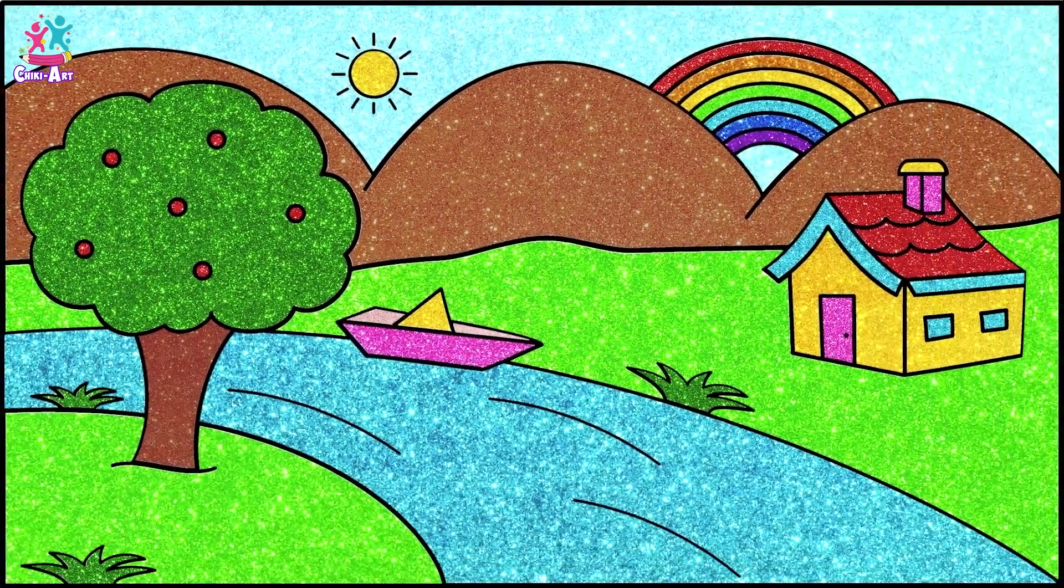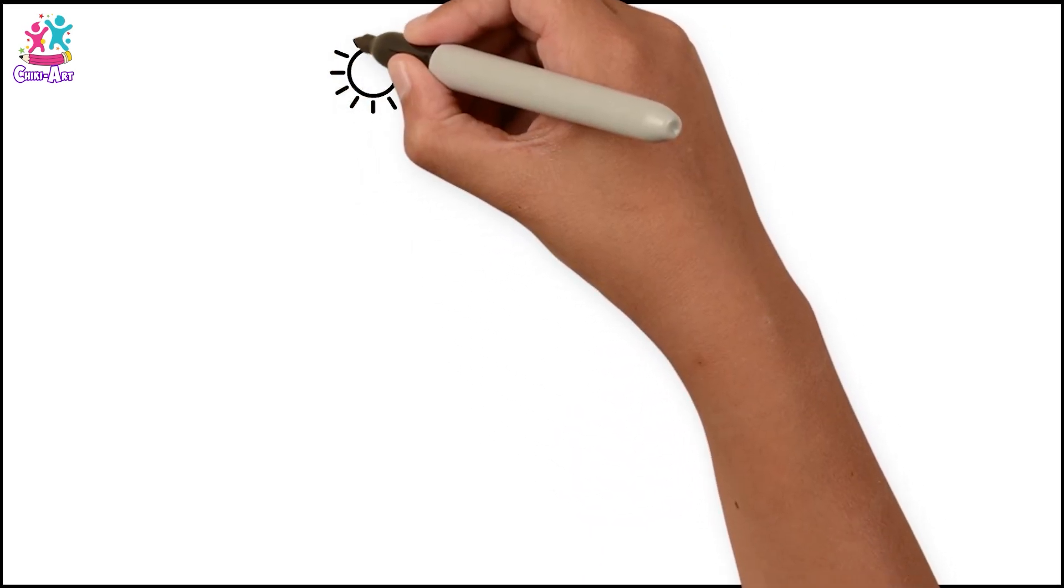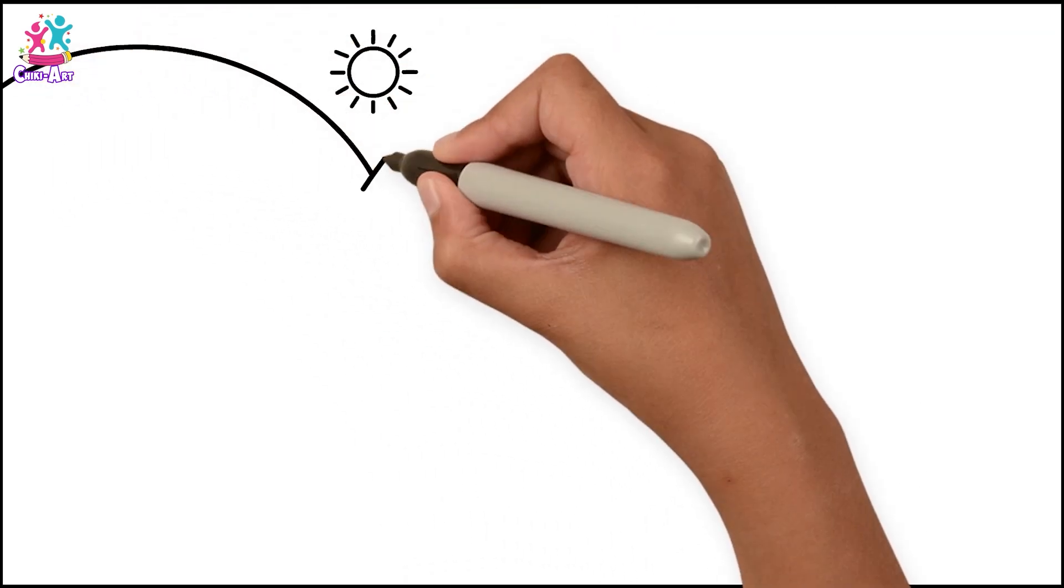Hi kids, how are you today? Look at this beautiful scenery. Are you ready to draw and paint it with me? Fantastic! We're going to start by drawing the sun. It's easy, just a circle with some rays.